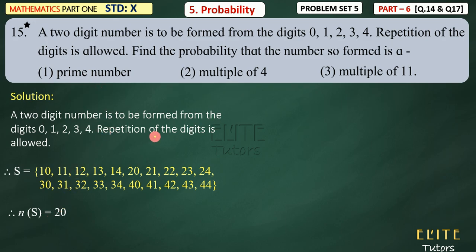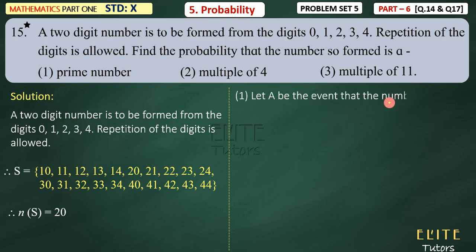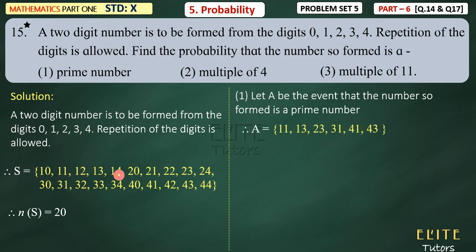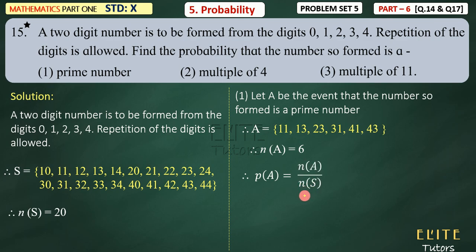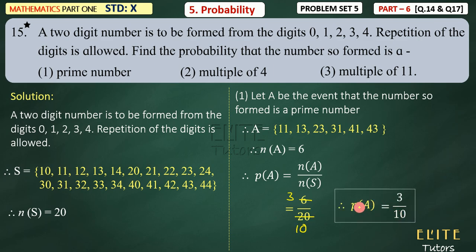Now we have to do three questions and we will assume three events. For the first one — prime numbers — let A be the event that the number so formed is a prime number. The prime numbers in our list are: 11, 13, 23, 31, 41, 43. That gives us 6 prime numbers. So N(A) = 6. P(A) = N(A) / N(S) = 6/20 = 3/10.